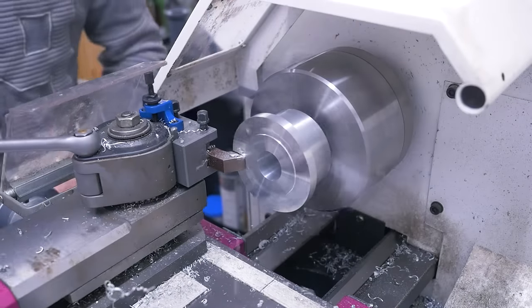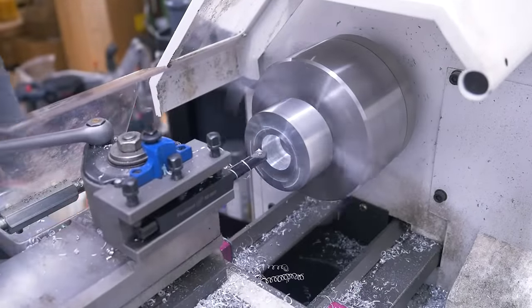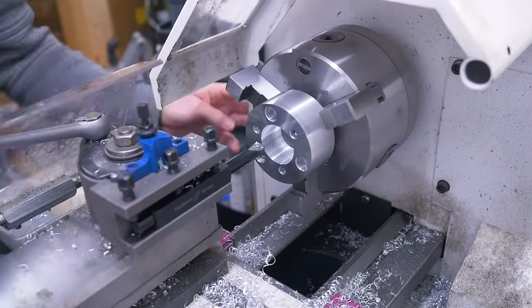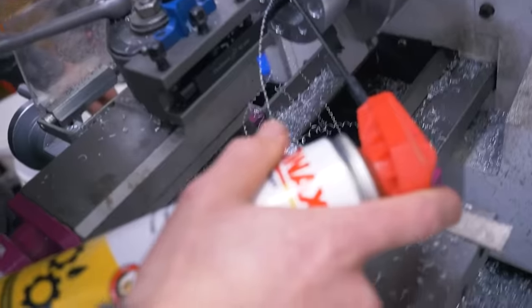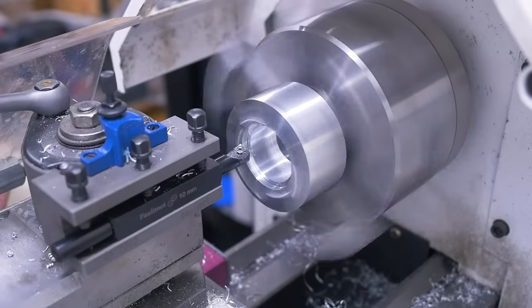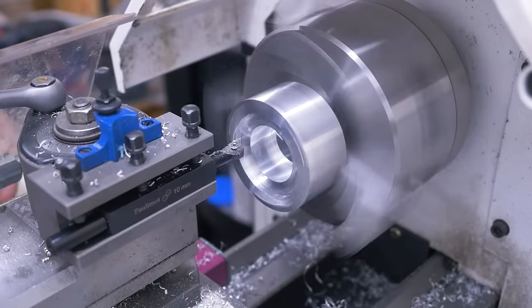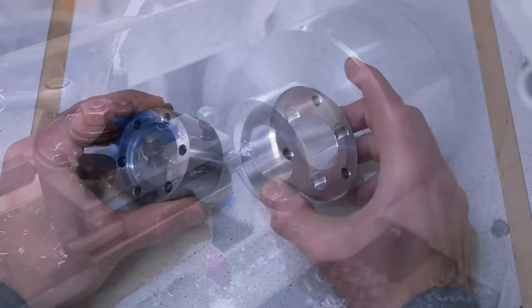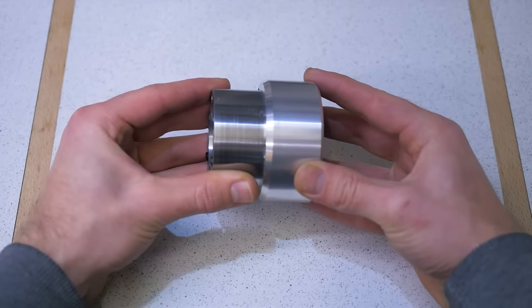Then I turned it to final thickness, enlarged the hole a bit more and turned a... oh, the camera got tired. So after a quick camera nap, I turned a recess which fits together nicely with the steel part and aligns them to each other.